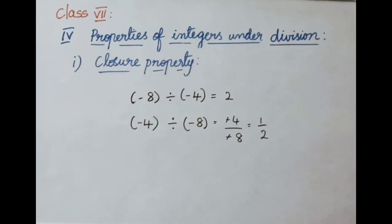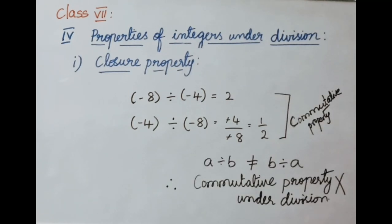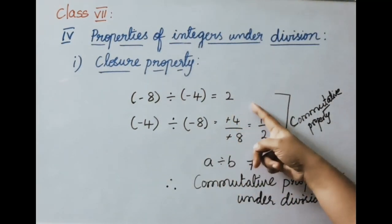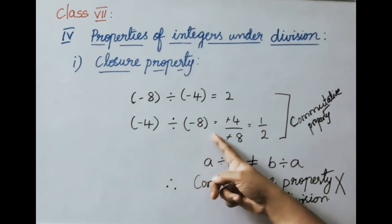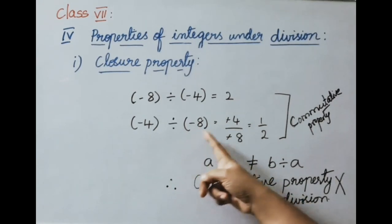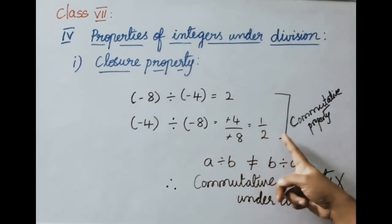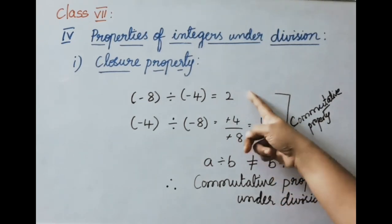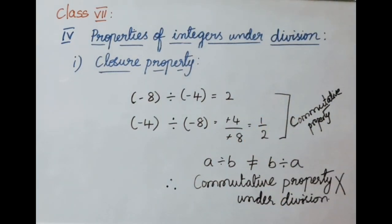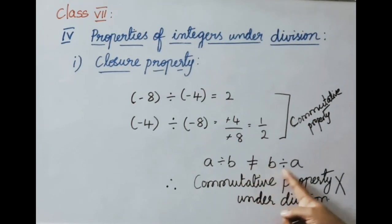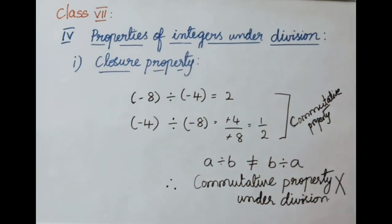Commutative property under division: A divided by B equals 2, but B divided by A is minus 4 divided by minus 8 equals one half. These two values are not equal. Therefore A divided by B is not equal to B divided by A, and integers do not follow commutative property under division.